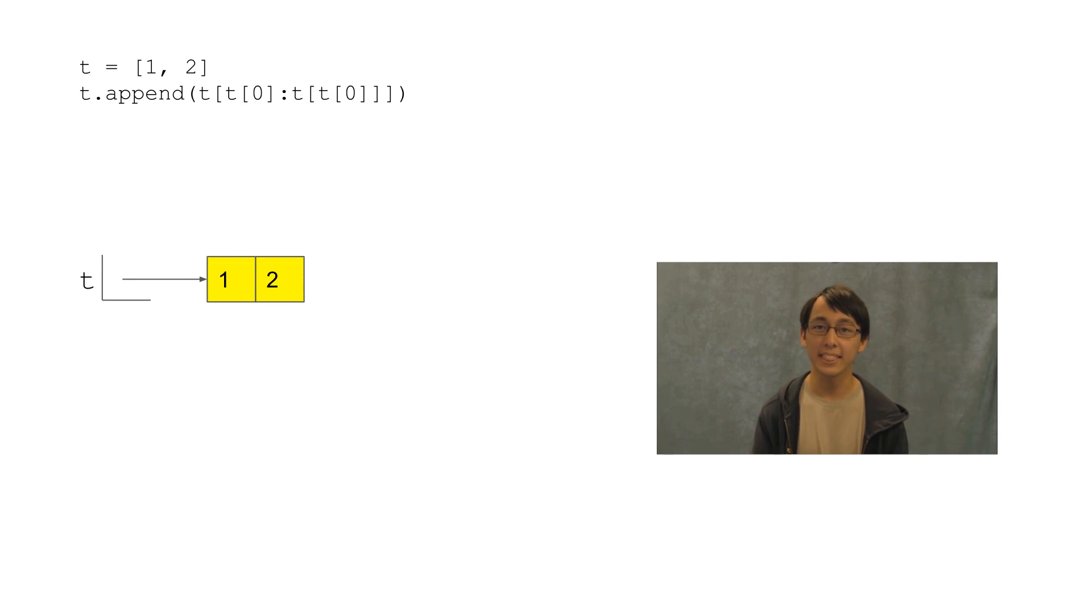This one's tricky because it does a thing with your eyes that makes it hard to tell which parentheses go with what. It's kind of like this language. But we can deal with this. We're once again appending something to this list, so let's draw one box at the end of one, two.